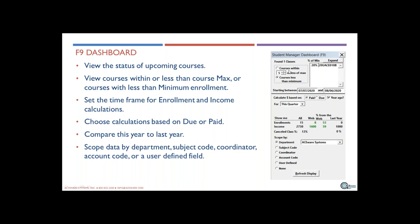F9 does a couple of different things. It lets you view the status of upcoming courses — ones below minimum enrollment or close to maximum. By default it covers a 30-day time period. The bottom part handles financial calculations: enrollment counts, income totals, and how many registrations came from the web. You can also include year-ago numbers for comparison.